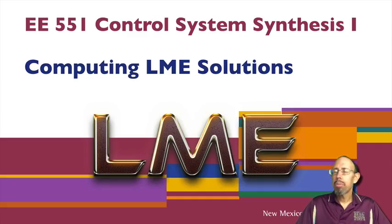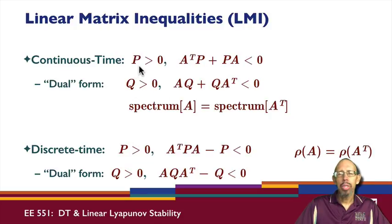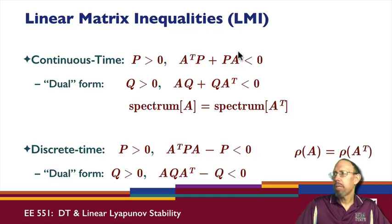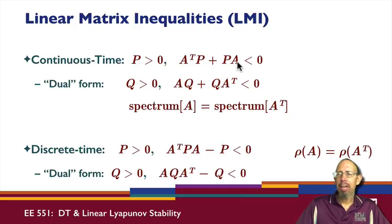Let's look at the subject of computing solutions to linear matrix equalities. We saw that linear matrix inequalities appear as stability tests for the matrix A. Given the matrix A, if we have a positive definite matrix P and A and P satisfy this linear matrix inequality, that tells us that the matrix A is a Hurwitz matrix — that is, it has all its eigenvalues strictly in the left half plane.